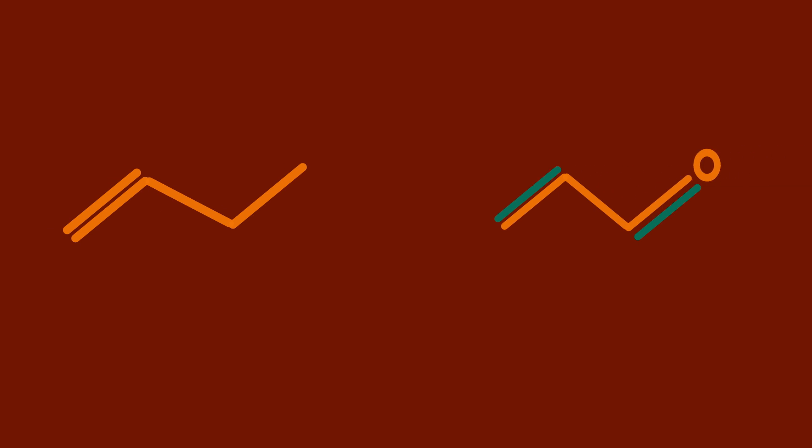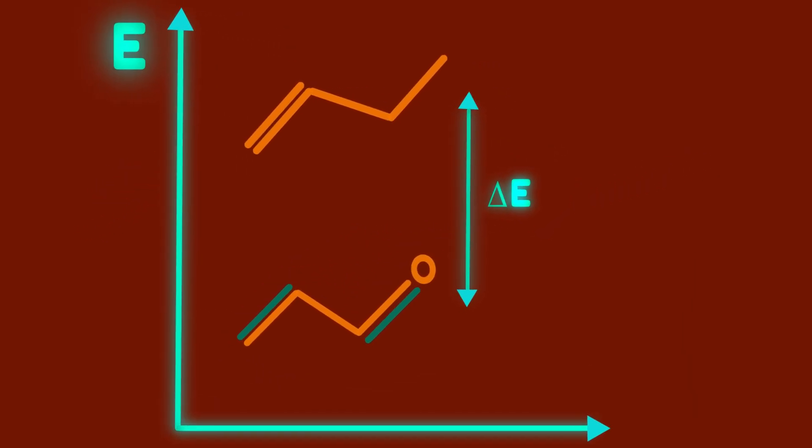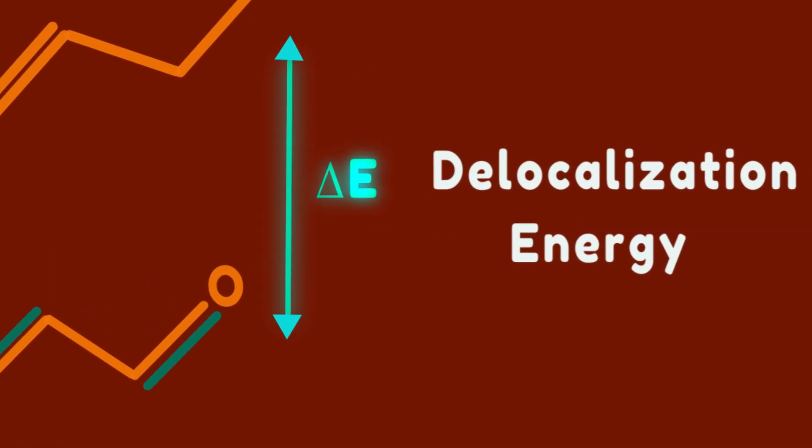When resonance occurs in a molecule, it means that the electrons are covering a larger number of atoms and they are occupying more space. This is defined as delocalization. Generally speaking, the more resonance structures leading to more stability. The energy of stabilization imparted by resonance is called resonance energy or delocalization energy.